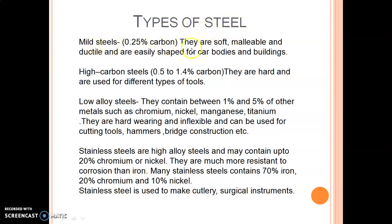Mild steels are used for car bodies and buildings. High carbon steels are used for different types of tools. Low alloy steels are also used for different types of tools. Stainless steels are high alloy steels — they contain different types of metals and are commonly used in cutlery and surgical instruments.